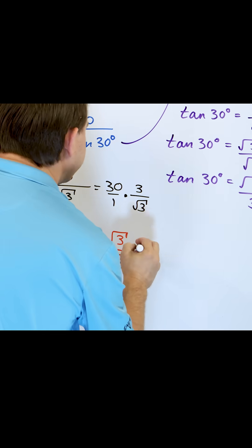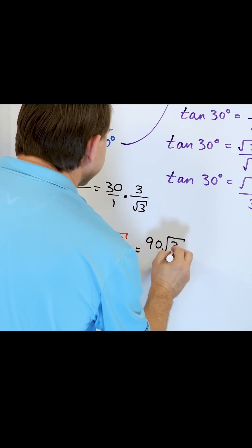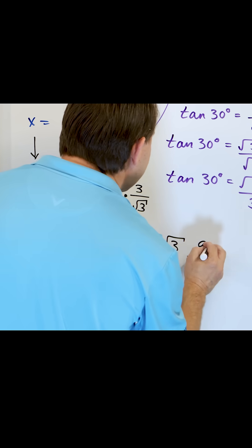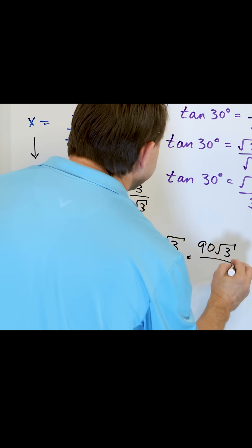And so we multiply the tops, we'll get 90 times the square root of three. The bottom will get square root of nine, multiplying under the radical. And so we'll get 90 times the square root of three over three.